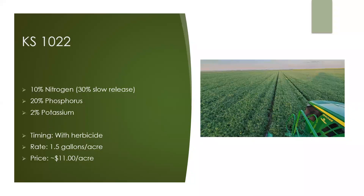KS 1022 is 10% nitrogen, 20% phosphorus and 2% potassium, with only 30% slow release nitrogen. This product works well on crops that require a lot of phosphorus, such as pulses. You apply it at herbicide timing at 1.5 gallons an acre, and the approximate cost is $11 an acre.